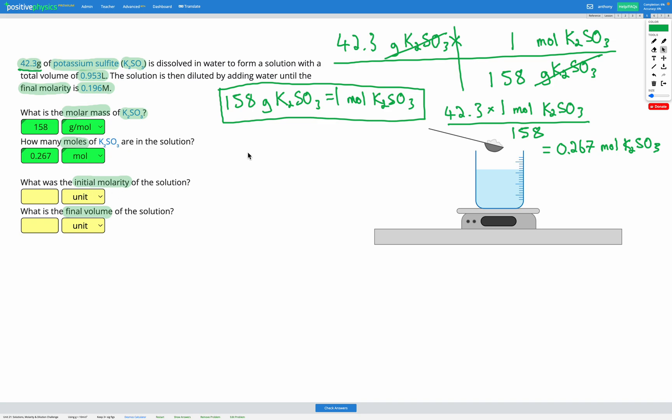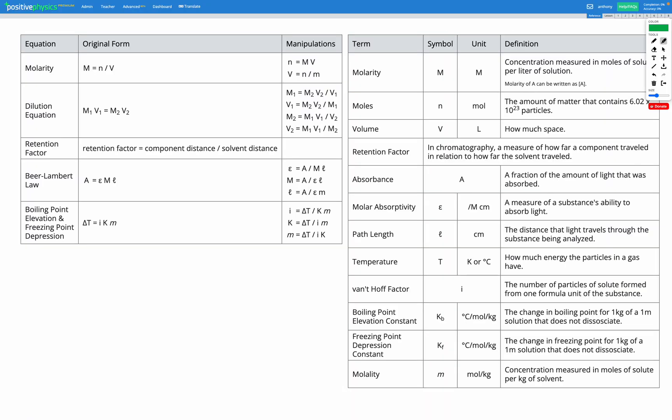Our next step is finding the initial molarity of our solution. We now know how many moles of K2SO3 we have and what the total volume was initially, 0.953. So our N is 0.267 moles, our V is 0.953 liters, and we're trying to find M, our unknown variable. Let's head to our reference sheet and find our molarity equation. Here it is. Molarity is number of moles divided by volume.